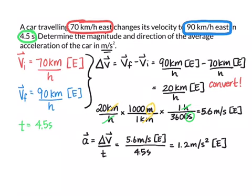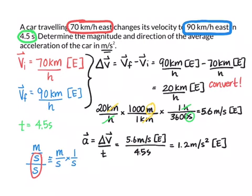The reason our units are meters per second squared is because we have meters per second as our velocity, and then we're further dividing that by seconds — essentially multiplying the two denominators together. It's the same as saying meters per second times 1 over seconds, giving us meters per second squared. The units of acceleration will always be a distance on top and a time unit squared on the bottom.